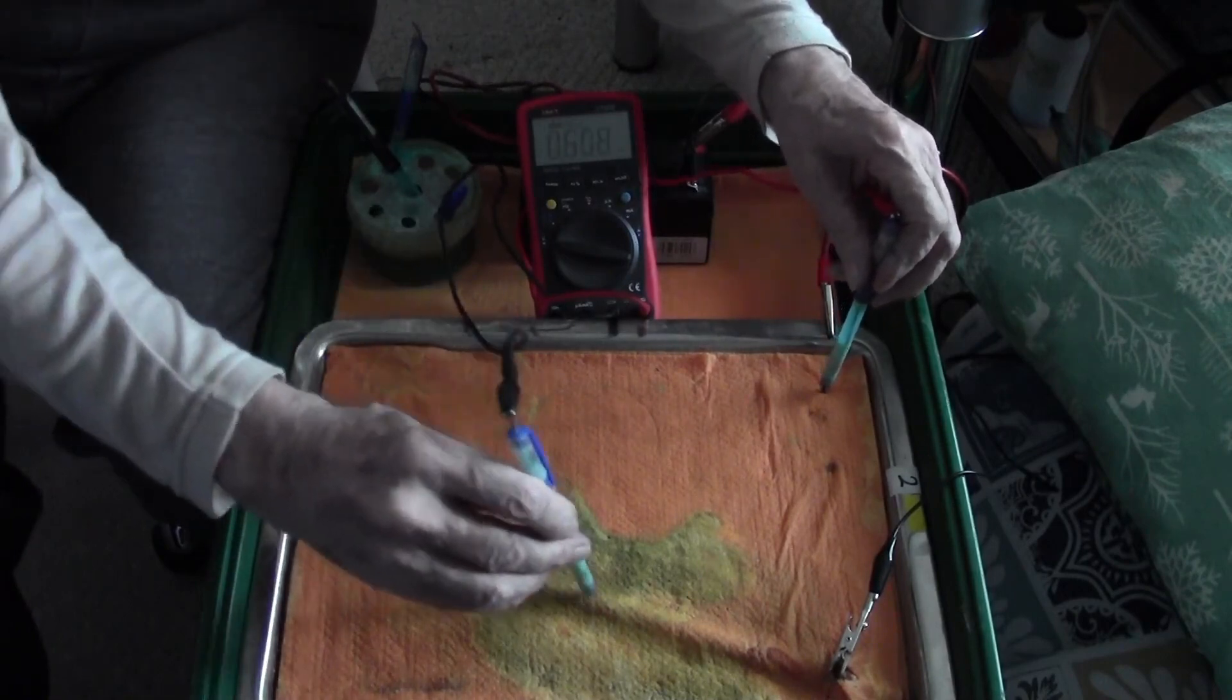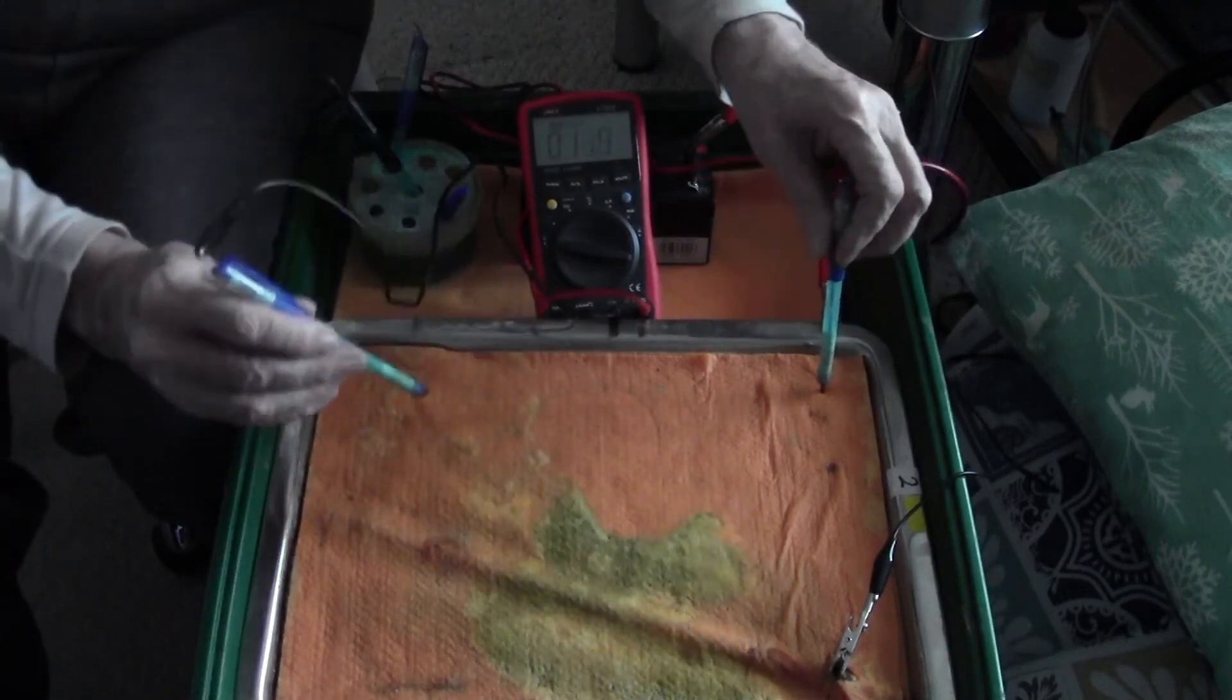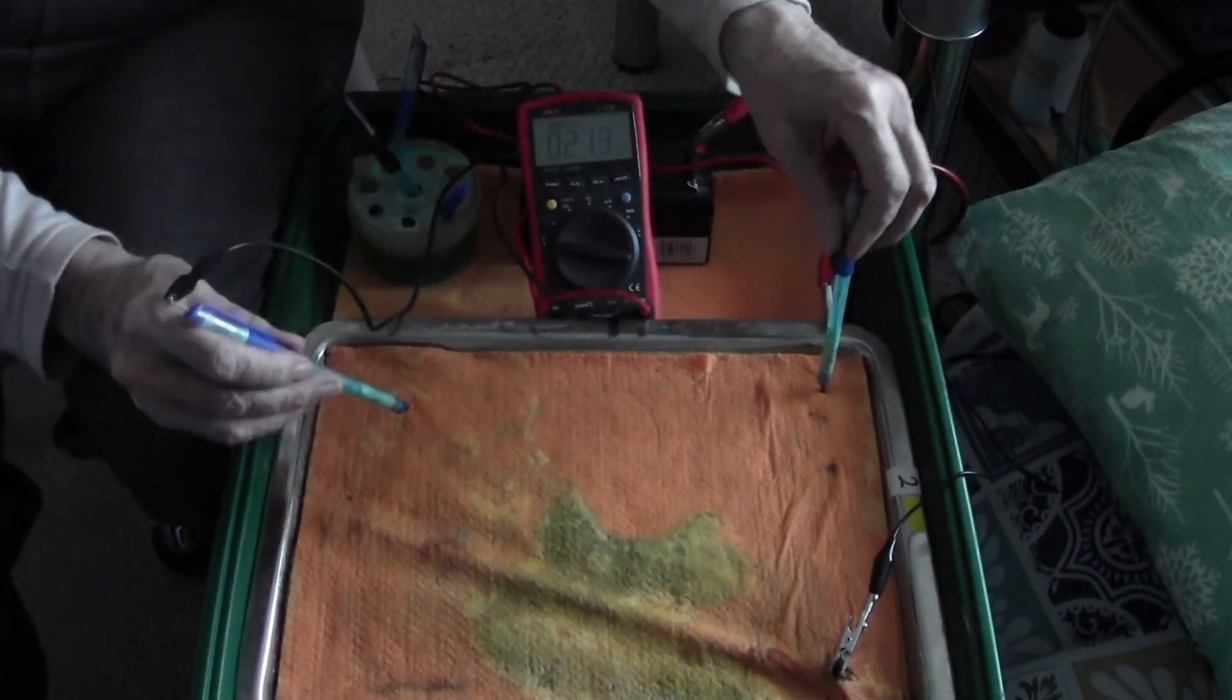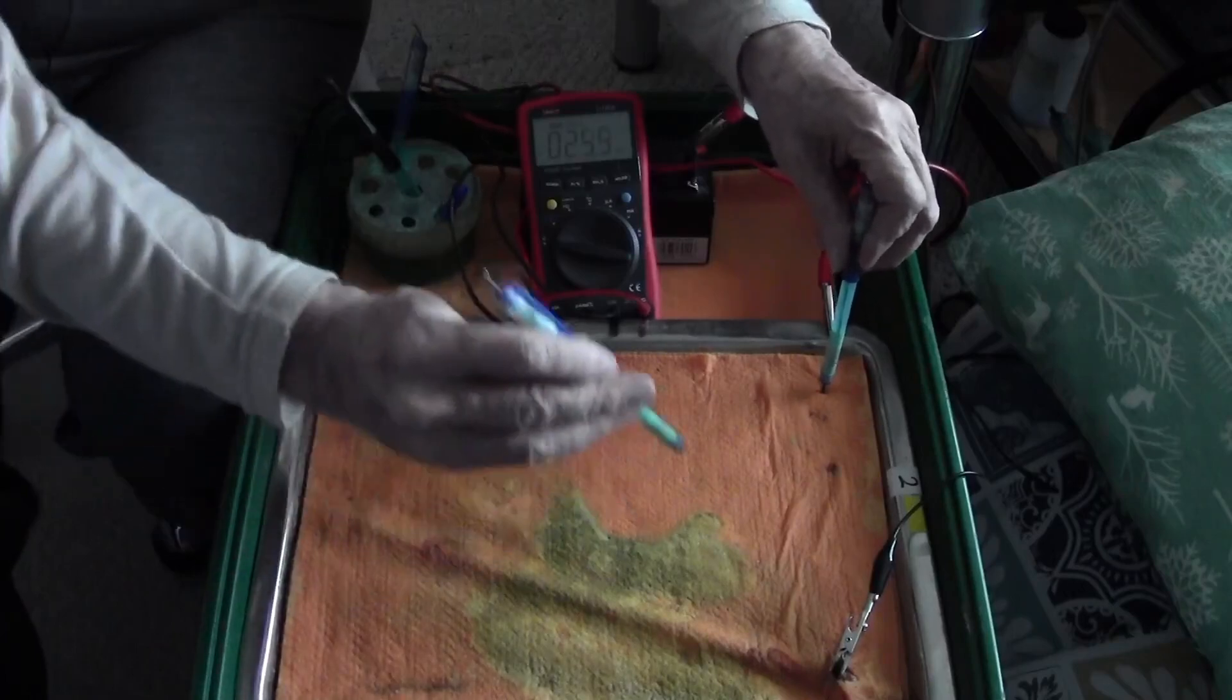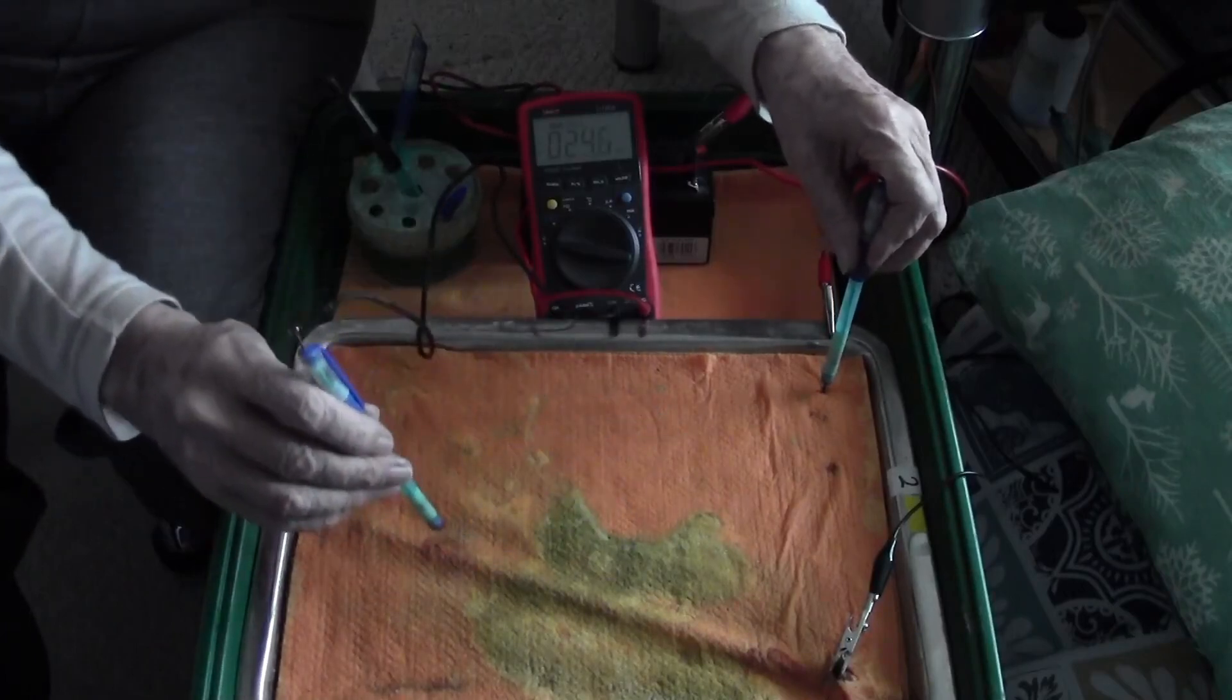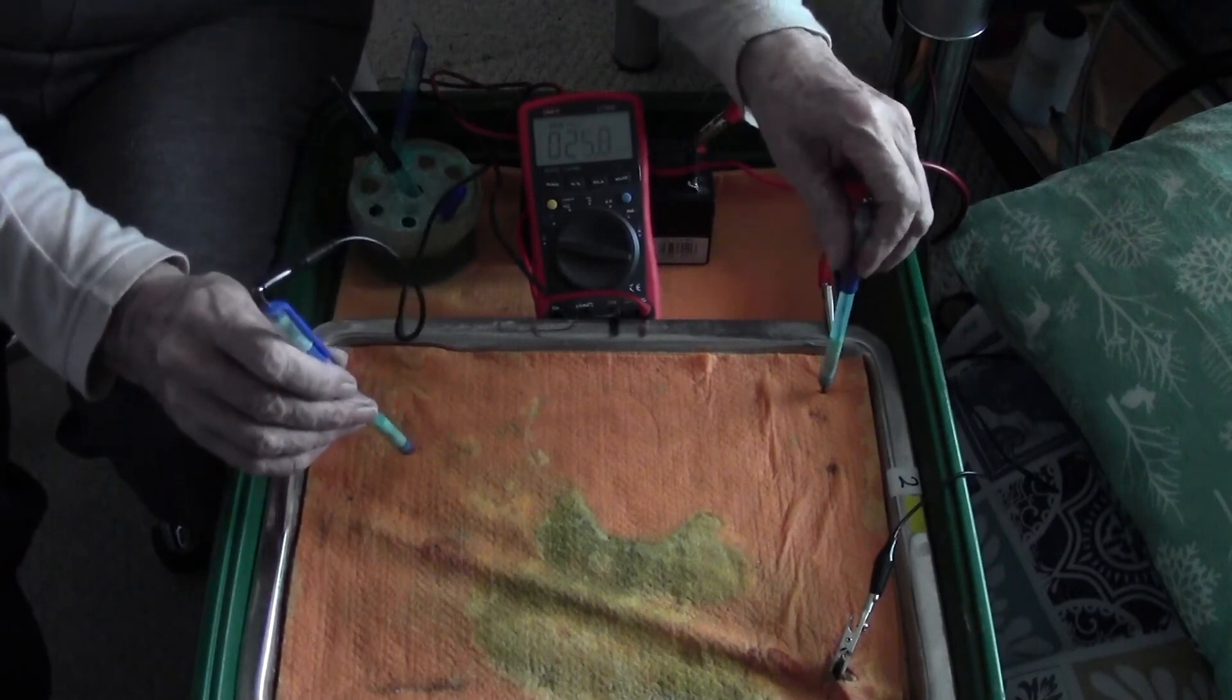The voltage that is coming from remote earth, that is the whole of the ground, and going into the pipe. This is how DCVG works.